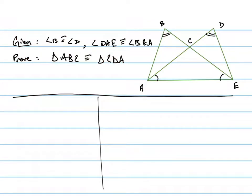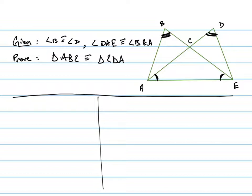Here's another example. In the figure, they're telling us that angles B and D are congruent to each other — that's why there are two double lines to indicate they're equal. They're also telling us that angles DAE and BEA are equal to each other, and they want us to prove that the two triangles are congruent.